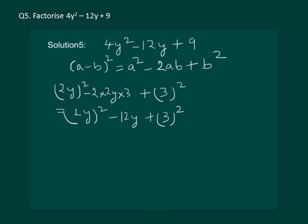Hence, we can use the identity and write it as a minus b, that is same as 2y minus 3 whole square. And hence, 2y minus 3 is a factor of 4y square minus 12y plus 9.